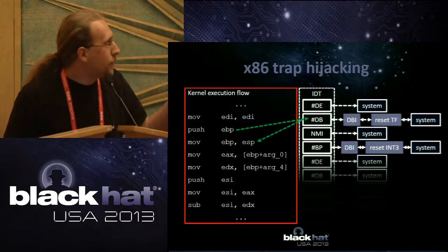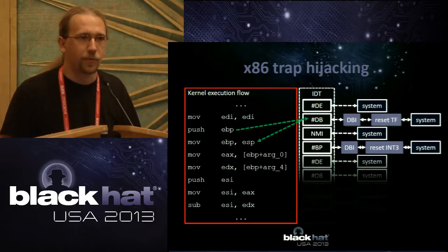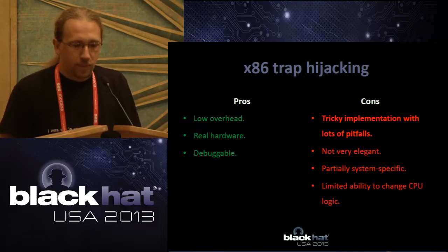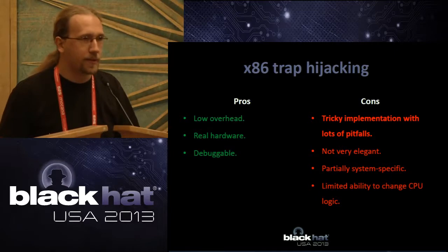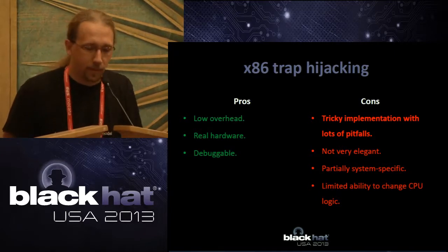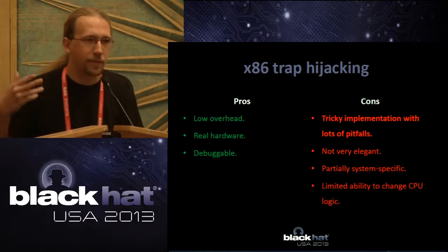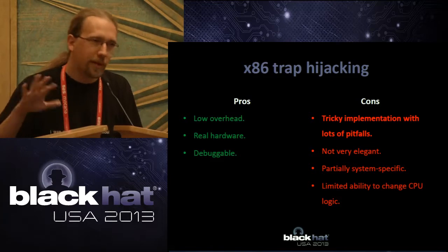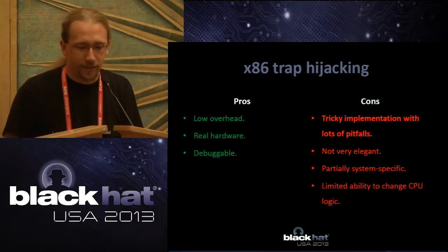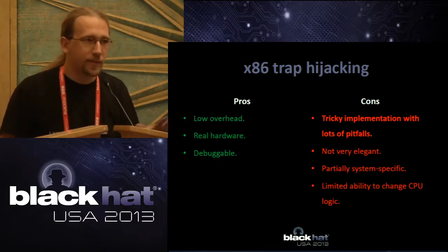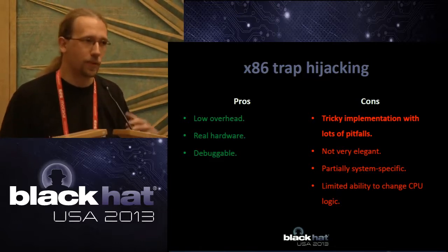Another approach is x86 trap hijacking — the method that SoftICE uses. It has pretty low overhead, allows access to real hardware, and is pretty debuggable. However, it's tricky to implement, and it's limited to what the CPU allows — what traps and exceptions it issues and what it allows you to set.